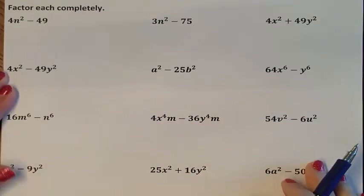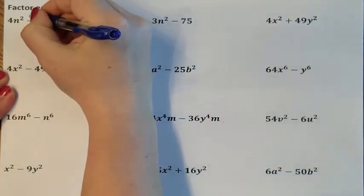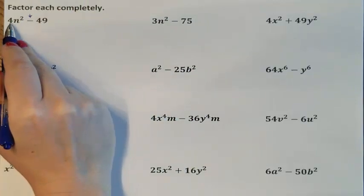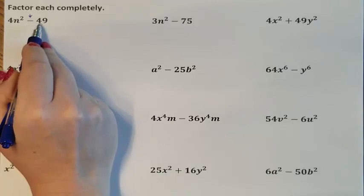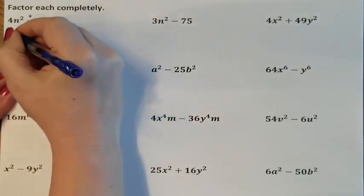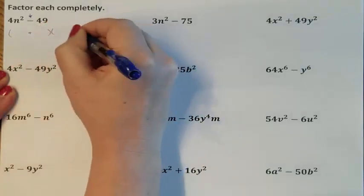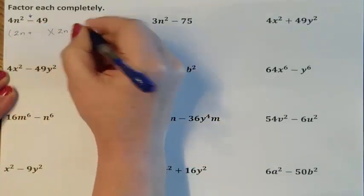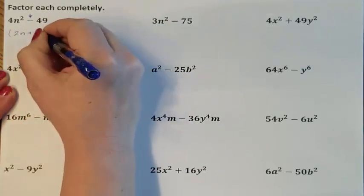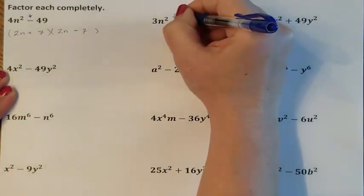So we have a practice worksheet. If it's not subtraction, you can't do it. This is subtraction. Can I square root of 4? Yes. Can I square root n squared? Yes. Can I square root of 49? Yes. So if you can do all of that, here is your parenthesis, plus minus. The square root of 4n squared was 2n. The square root of 49 is 7. And this is your final answer.